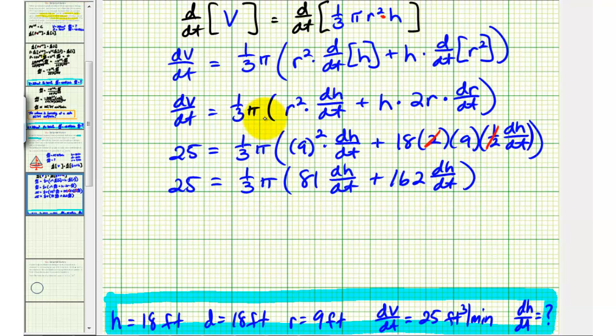Let's go ahead and multiply both sides of the equation by three. So three times 25 is 75. Three times one-third is just one. So we have pi times the quantity 81 plus 162 is 243. So we have 243 dh/dt.